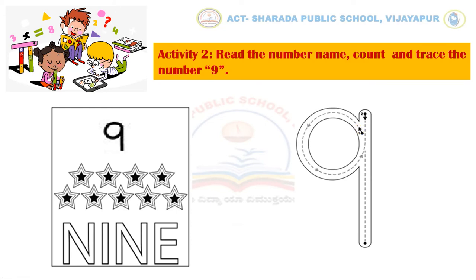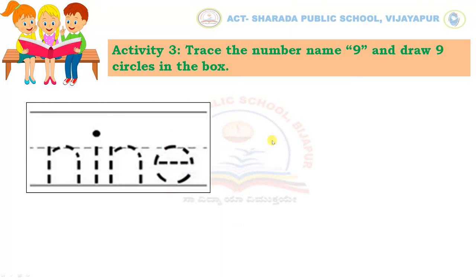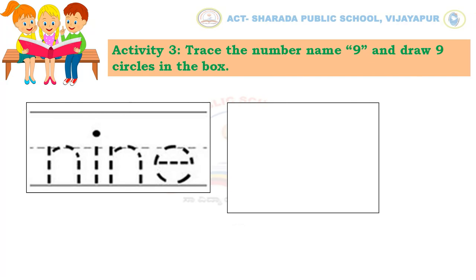Let's move to the third activity. That is, trace the number 9 and draw 9 circles in the box. Kids, in this activity, you have to trace number 9 and draw 9 circles in this box, as shown here, to complete this activity.